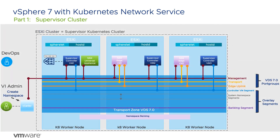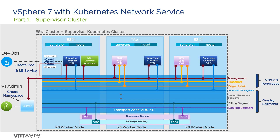The DevOps team has access to the namespace and deploys a set of pods with a load balancer type service. The pods are attached to the banking segment and get an IP from the range assigned to that segment. A new virtual server is created on the load balancer with an IP from the ingress CIDR to provide access from outside the cluster. Any new namespaces would also get their own segment.